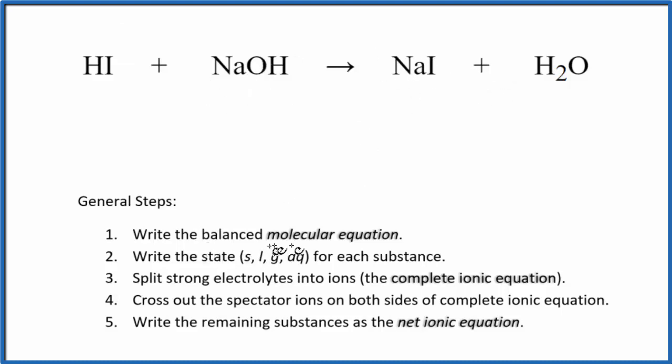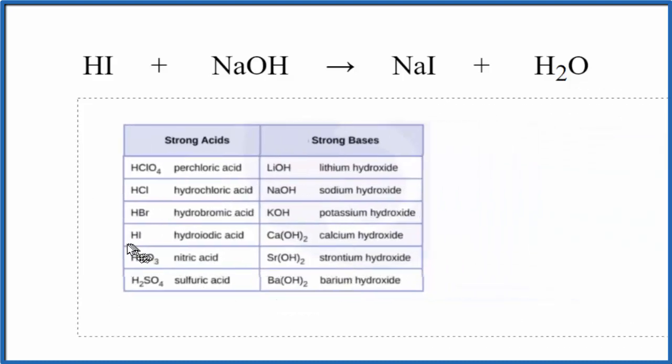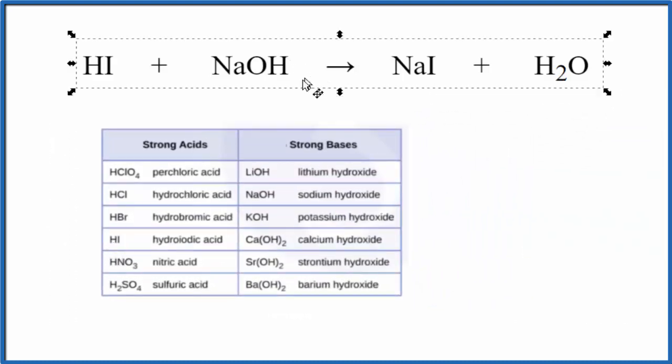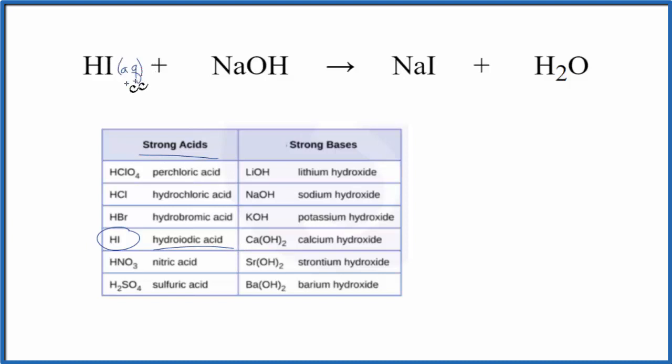Next, we need to write the state for each substance. This chart here can be helpful when we're looking at acids and bases. We have an acid and a base here. We look down. Here's HI. Hydroiotic acid is a strong acid. That means it's also a strong electrolyte, and it'll dissociate into its ions. We call that aqueous.